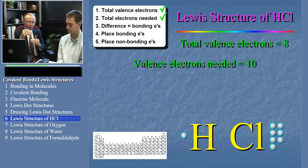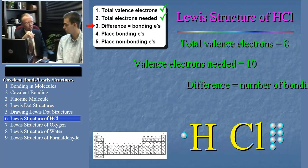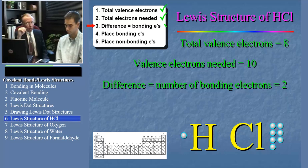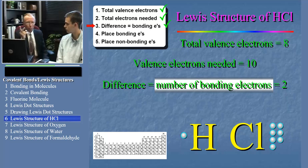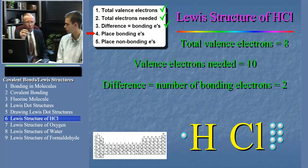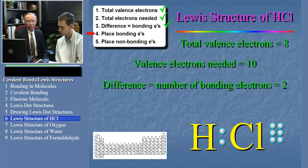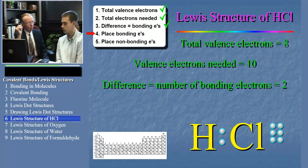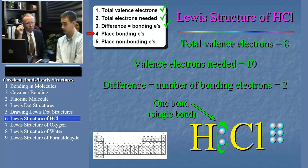So the next step is to take the difference between the valence electrons we have and the electrons we need. What is that difference? That difference is two. Good. And two then represents the number of electrons that will be in bonds in the molecule. Let's put those two electrons between the two atoms like this. Now, how many bonds does that represent, Bracken? Those two electrons represent one bond. Good.